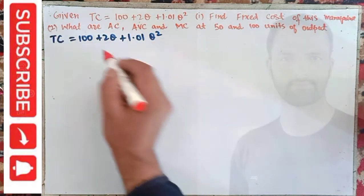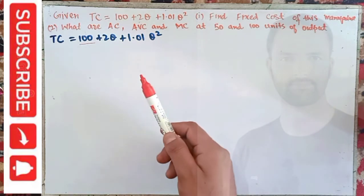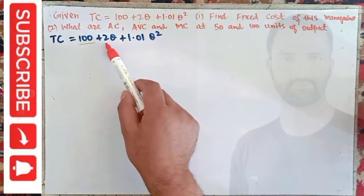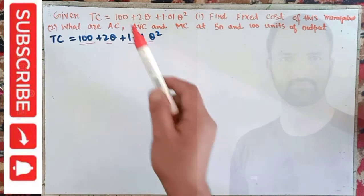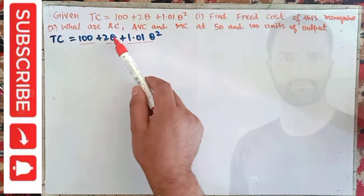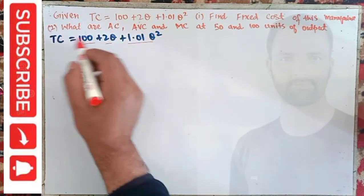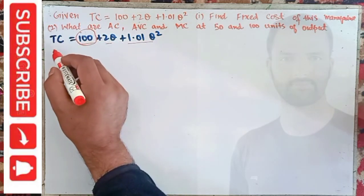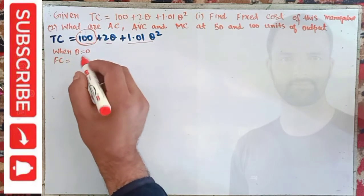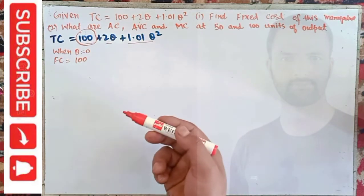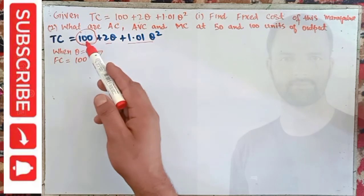The first part is very simple. What is the fixed cost? In this total cost, the fixed cost is the constant term. A fixed cost is the cost which does not depend on the level of output produced. The second and third terms depend on Q, but the first term does not depend on Q. Fixed cost exists when the quantity produced is zero — when Q = 0, the variable terms become zero. So the fixed cost is simply the constant term: FC = 100.